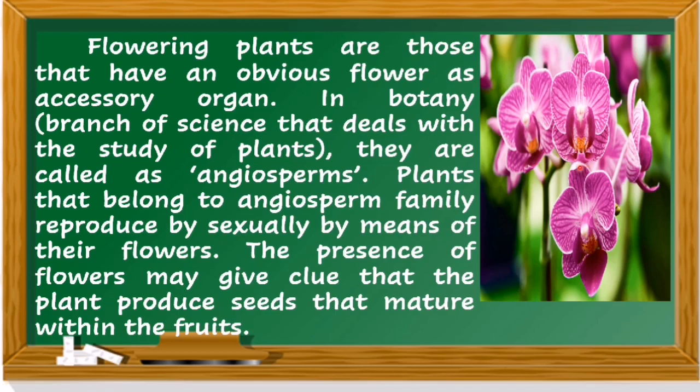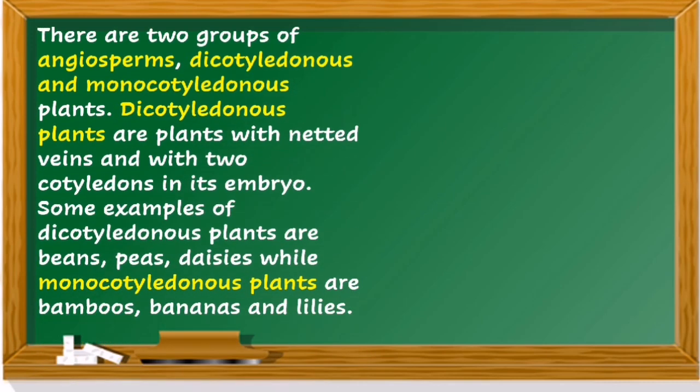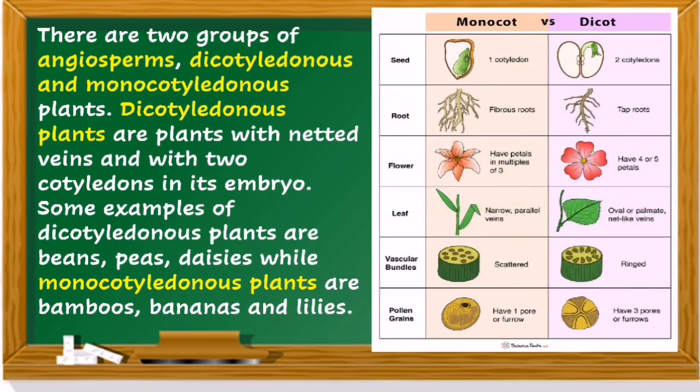flowering plants are called angiosperms. Plants belonging to angiosperms are commonly reproduced sexually or by means of their flowers. The presence of flowers may give a clue that the plant produces seeds that mature within the fruits. There are two groups of angiosperms: the dicotyledonous and monocotyledonous plants.